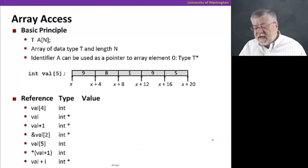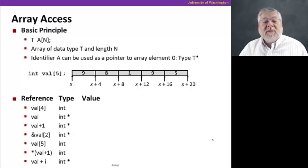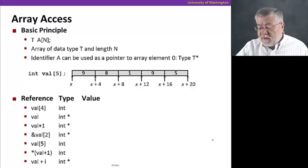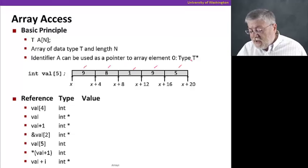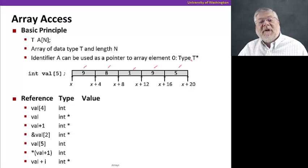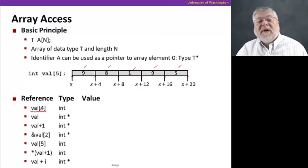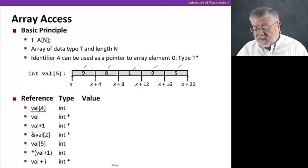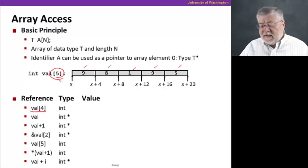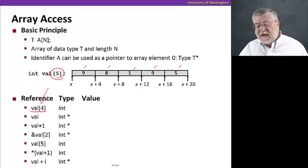Continuing with this, let's take a look at an example here. We have a five element array called val. It has the following integers stored in it: 98195. That happens to be the zip code for the University of Washington. Let's take a look at how we might reference these values. We'll start off with an example of val sub four. We are actually looking here for the fifth element of the array, because the indices start at zero.